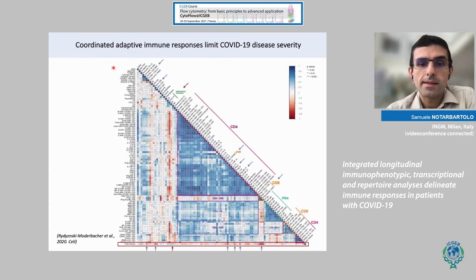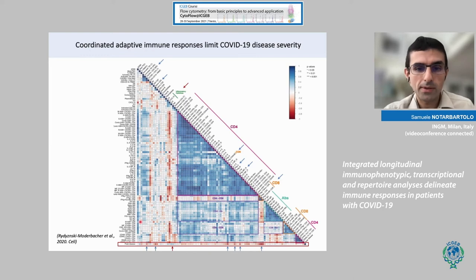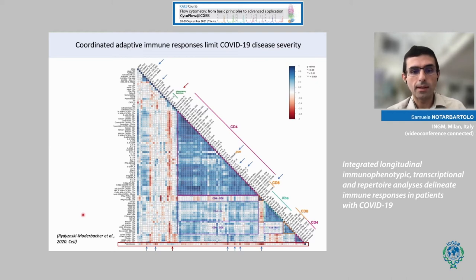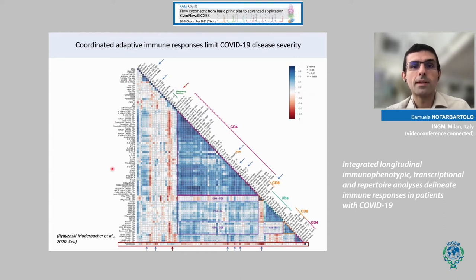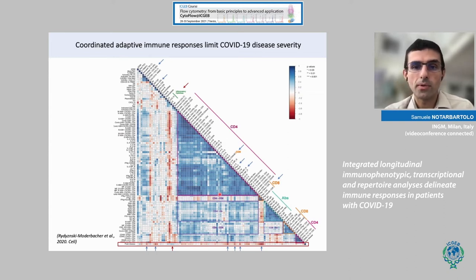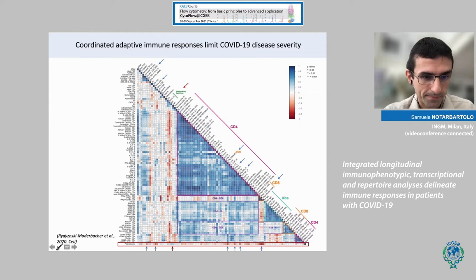This is a relevant piece of literature published by the group of Shane Crotti and Alessandro Serti in La Jolla, where they measured a large number of immunological variables in hundreds of patients and then correlated all these variables to verify how they reflected on the outcome of the disease.